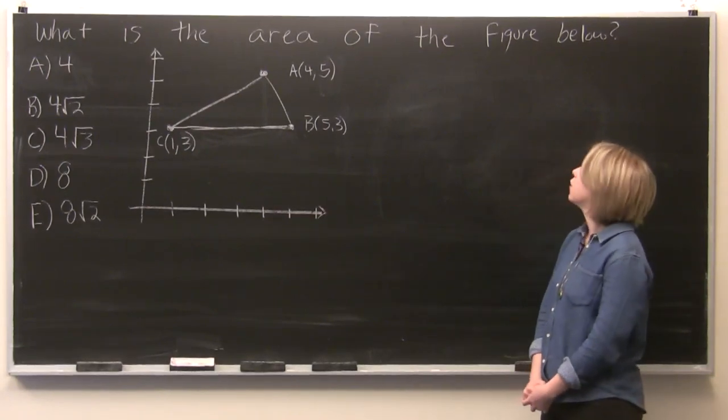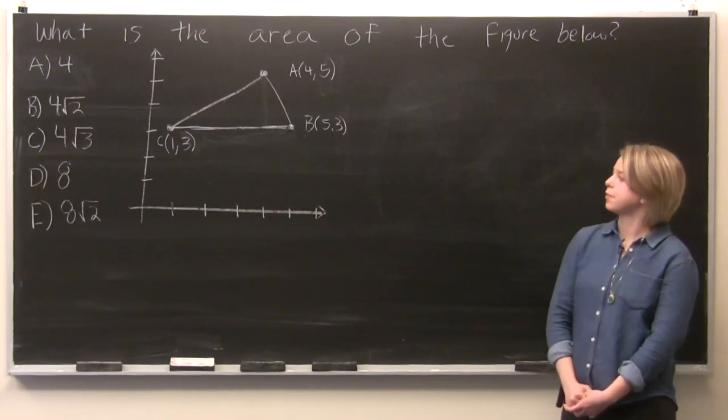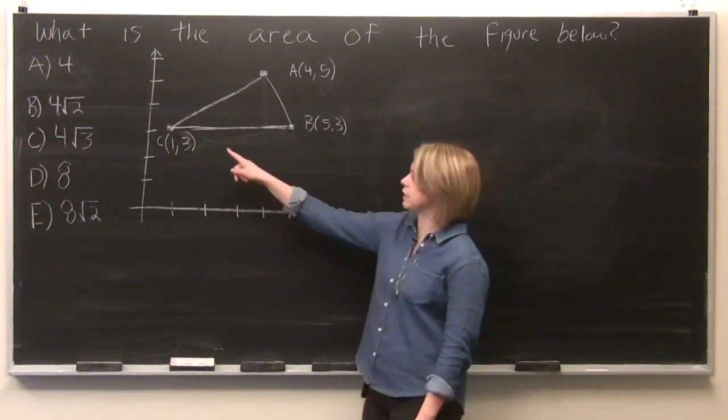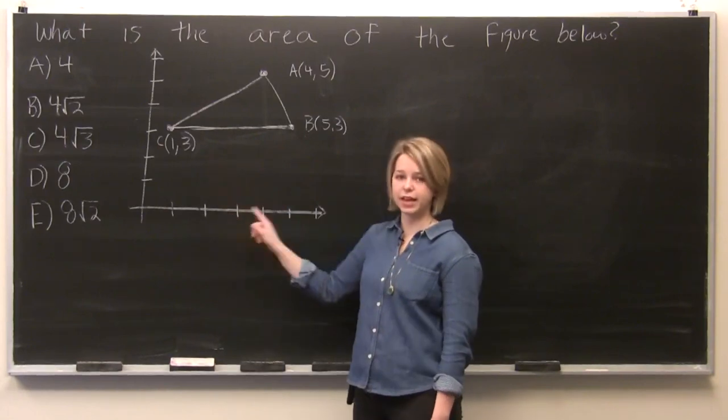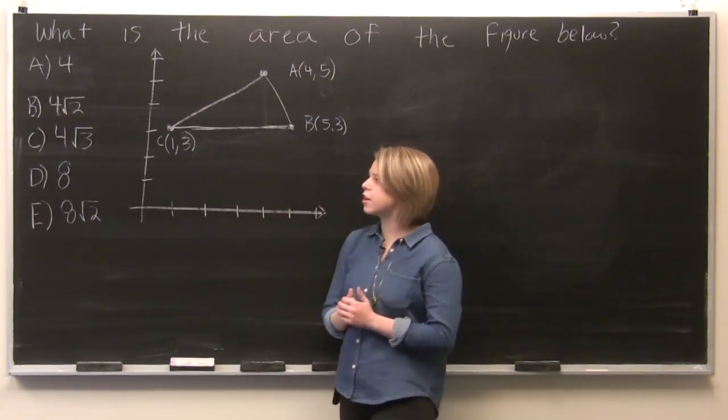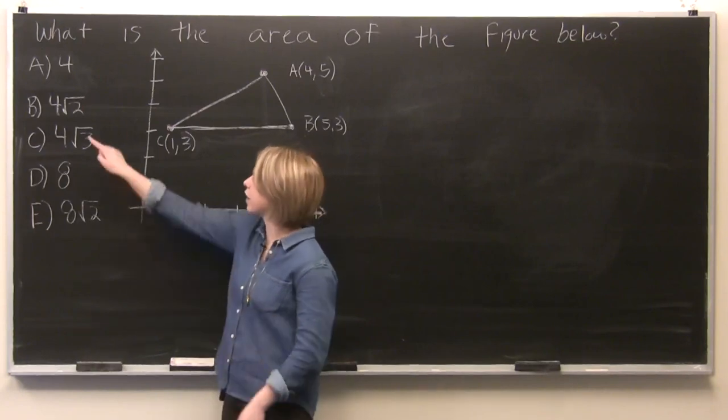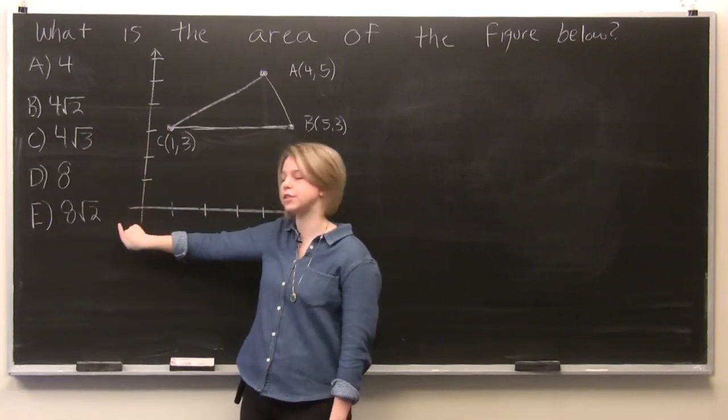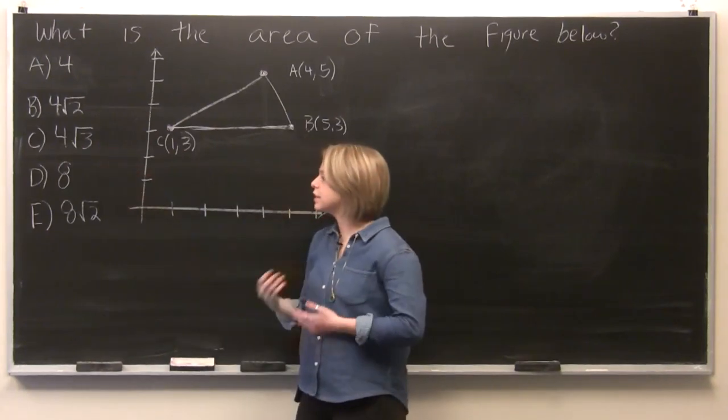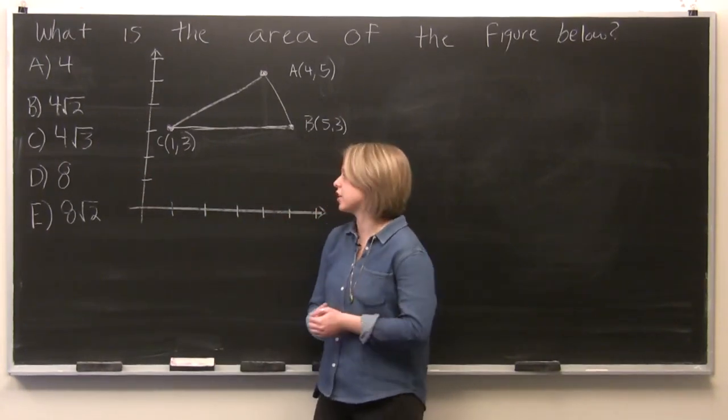So our question here reads, what is the area of the figure below? Our figure is this triangle sitting on the xy plane. And if we look at our answer choices, we see that they're a little bit kind of scary. We've got a square root of 2 here, a square root of 2 here, and a square root of 3. But this is really just the ACT trying to scare you.